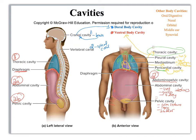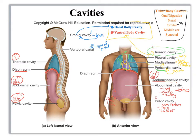Now these cavities — the dorsal and ventral — are the major body cavities where you've got really big organs. We've also got other body cavities — these are little ones. Like your mouth: the inside of your mouth is the oral cavity. The inside of your nose is the nasal. The orbital is where your eye is. Middle ear is where your ear bones are. Synovial is going to be a joint cavity. So we've got other little cavities in the body, but the big major ones are the dorsal and ventral.